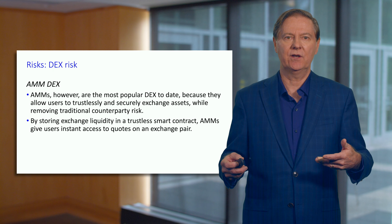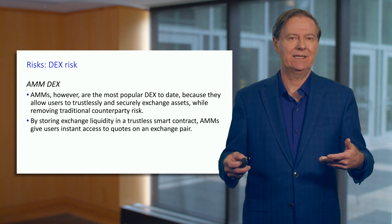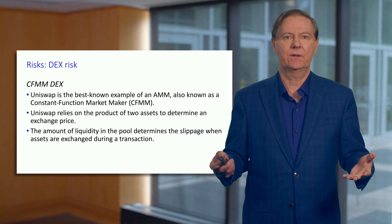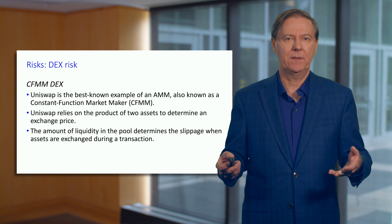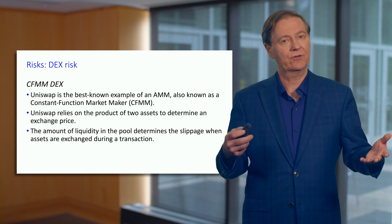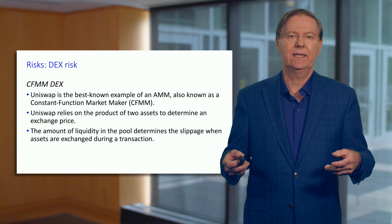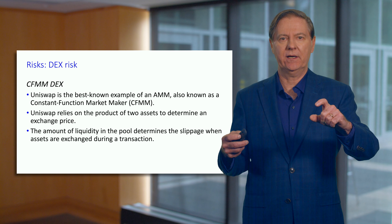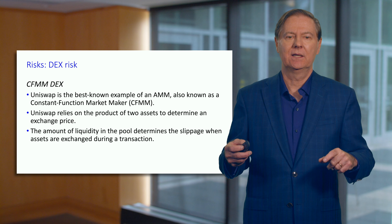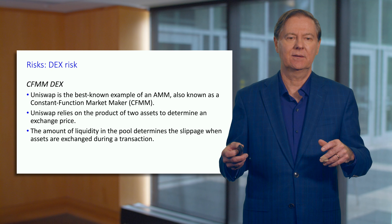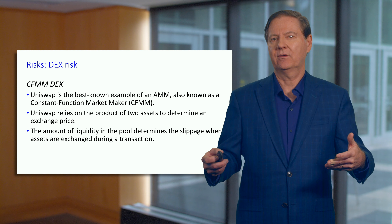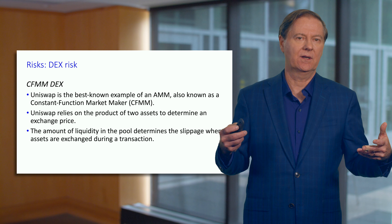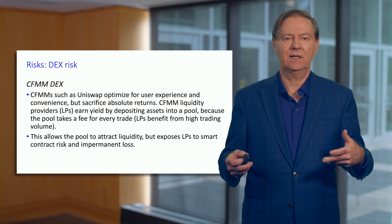This is a challenge with decentralized exchanges. We've talked about the constant function market maker in Uniswap version 2, and version 3 which is more akin to a limit order book where you can specify a range for the liquidity you allocate. We've also talked about innovations like having a pool with multiple assets of different weights, as in Balancer.